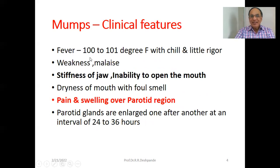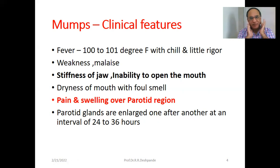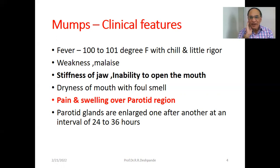Clinical features: fever from 100 to 101 degrees Fahrenheit — moderate type of fever — with chills, weakness, and malaise. There is stiffness of the jaw; the patient cannot open the mouth. Dryness of mouth with foul smell. Pain and swelling over the parotid region. The parotid glands are enlarged one after another at an interval of 24 to 36 hours — within a couple of days the first gland is involved, then after two days the other gland can also be involved, though most of the time it is unilateral.